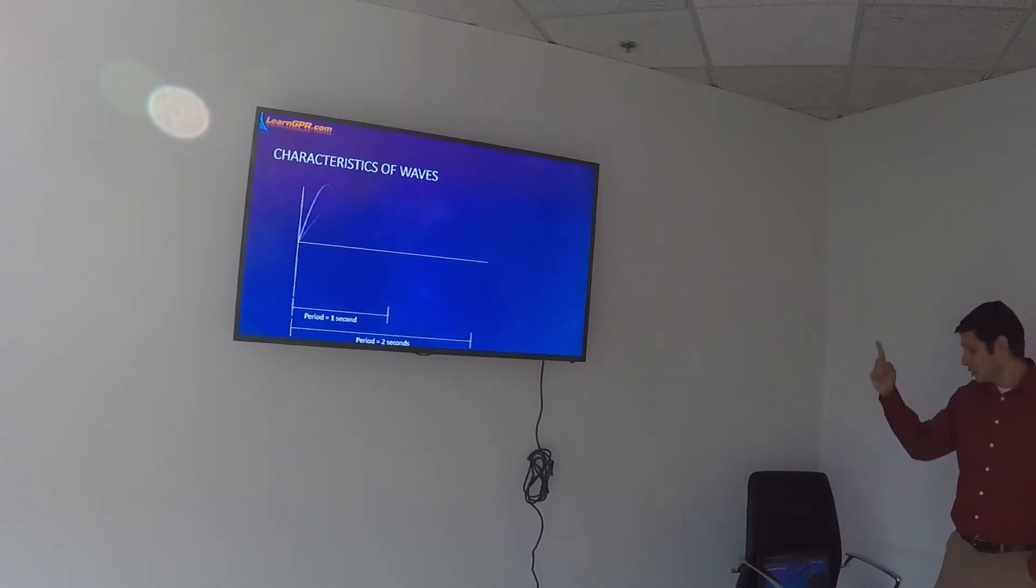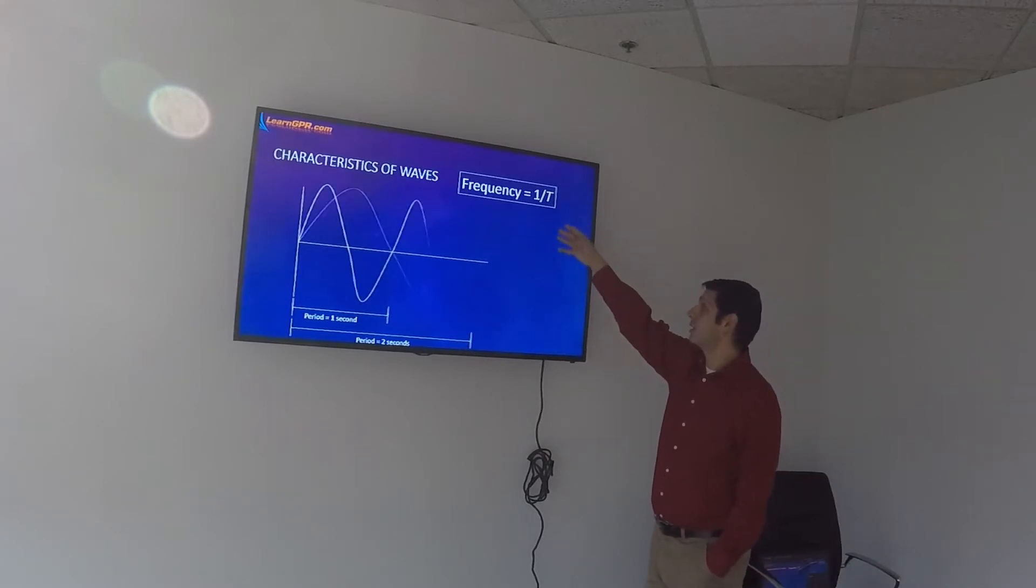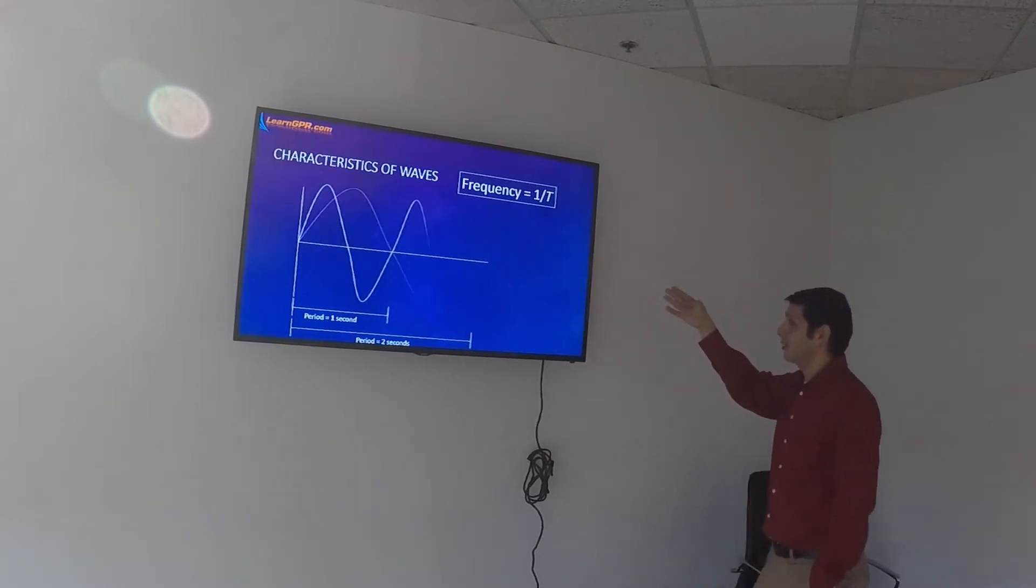And what we're going to do here is calculate the frequency then of each of these waves. So the frequency you can calculate by one over the period. T stands for, or tau stands for, the period. So one over period is the frequency of a wave.